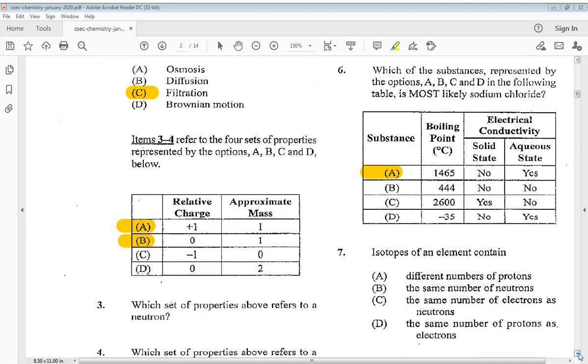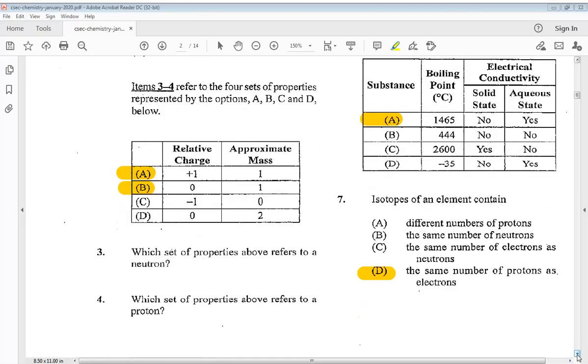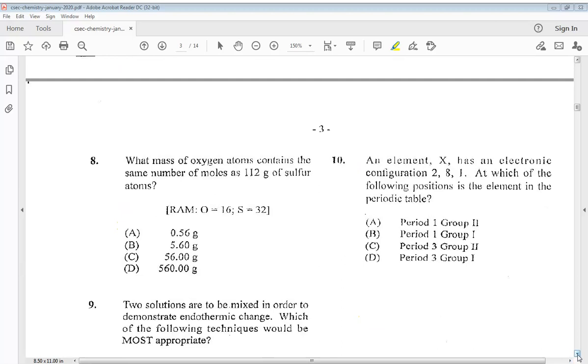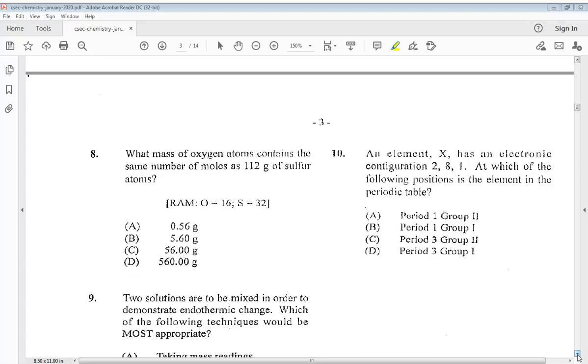Seven. Isotopes of an element contain: A. different numbers of protons, B. the same number of neutrons, C. the same number of electrons as neutrons, D. the same number of protons as electrons. So the answer is D. The same number of protons as electrons. Let's go to number eight. What mass of oxygen atoms contains the same number of moles as 112 grams of sugar atoms? So the answer is C. In your working out, you should get C.